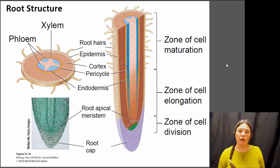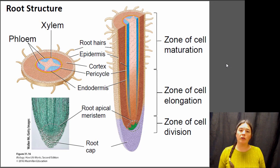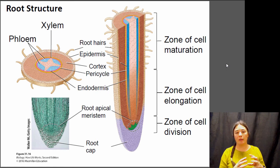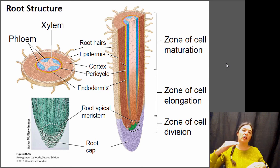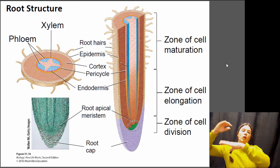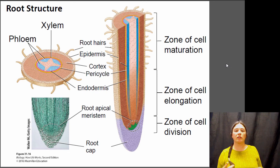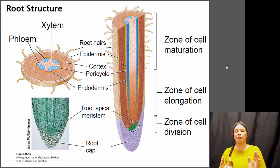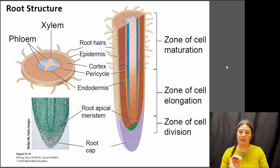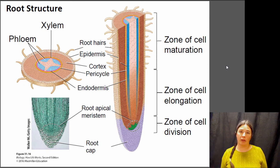Let's talk about root structure and how root growth happens. Root growth is quite similar to stem growth: there's one area at the tip of the root where cell division takes place, then a zone of elongation where cells get larger, and then a zone of differentiation where they differentiate into their different tissue types — a very similar structure to what you see in the stem. At the very tip of the root is the root cap, which protects the growing, dividing section of the apical meristem from abrasion by the surrounding soil.